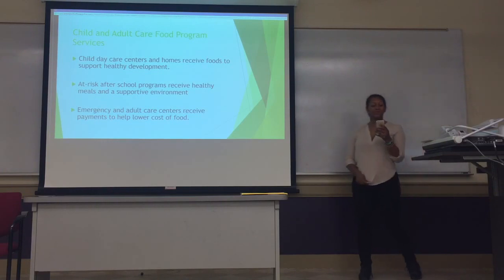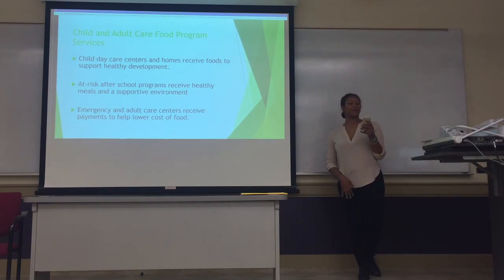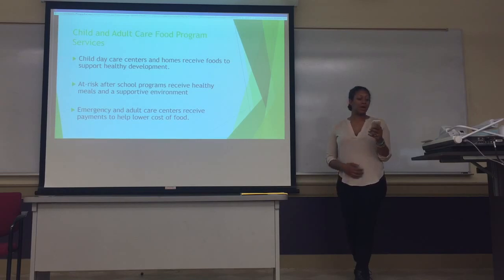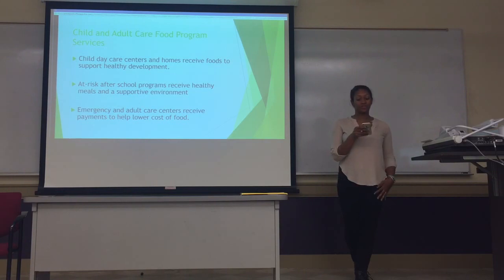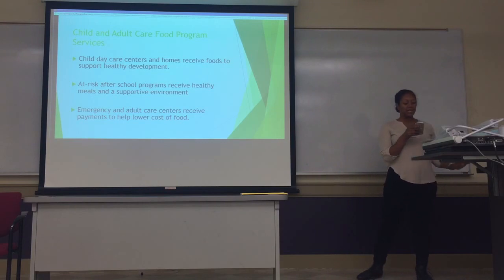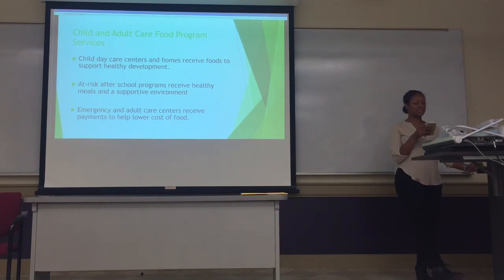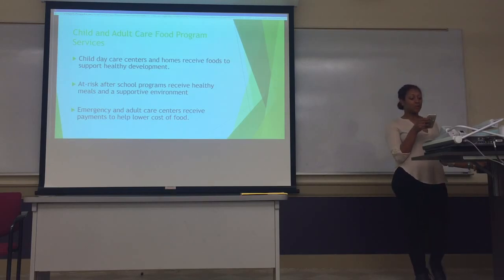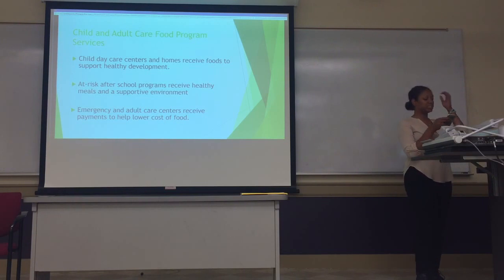The Child and Adult Care Food Program provides services by reimbursing the institutions mentioned. While the aim is to improve food and care throughout the country, certain populations benefit directly. Children in child day care centers and homes receive food proven to lead to healthy development for their age group, and in after-school programs, children and teens receive meals as well as a supportive environment that keeps them safe.